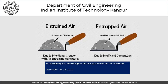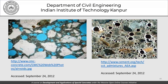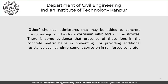Trapped air refers to large, non-uniformly distributed pockets largely due to insufficient compaction. Entrained air, in contrast, is a more uniform distribution of smaller-sized air particles, which causes an increase in workability due to a ball-bearing action. Pictures taken from research efforts around the world show the difference between entrapped and entrained air within the concrete matrix. Other chemical admixtures that may be added during mixing include corrosion inhibitors such as nitrites, which provide additional resistance against reinforcement corrosion in reinforced concrete.